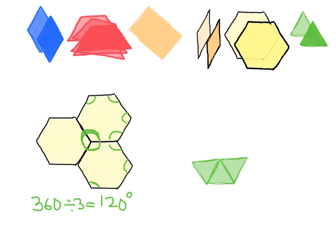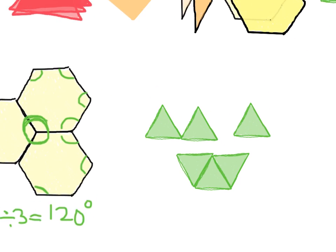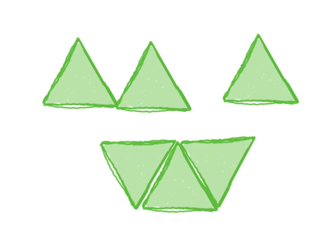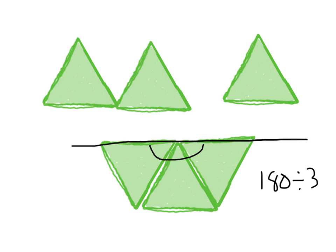Let me do this fairly quickly — rotate — there we go. Now this is enough to give us the answer. Let me zoom in a bit. One, two, three — and we can see that these three angles form a perfect straight line. So that means each angle is 60 degrees.